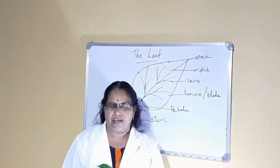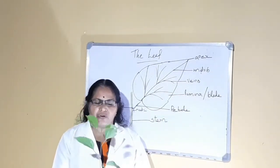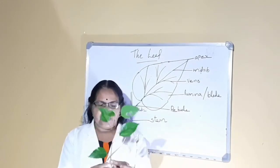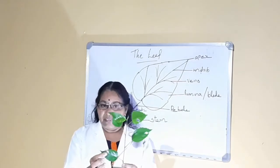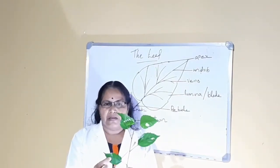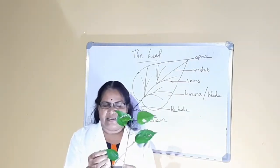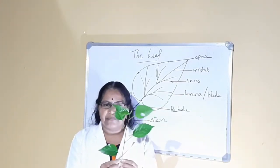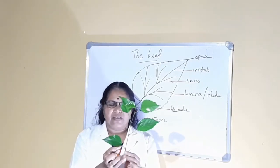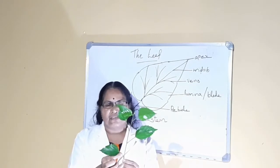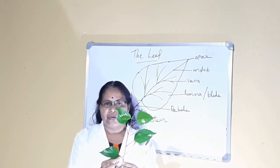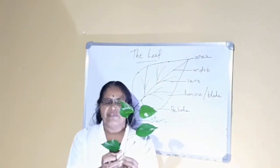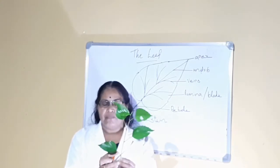Here you can see a leaf. Which plant is this? It is the leaf of the hibiscus. Here you can see the leaves — this is only a branch of the hibiscus. Leaf is the flattened green part of the plant, the flattened green part of the shoot system. How is the leaf attached on the stem? It has a stalk here — that stalk is called the petiole.